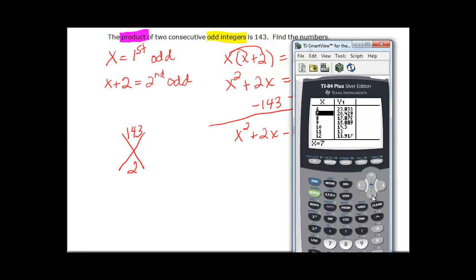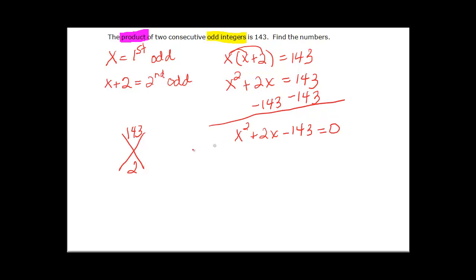So it's a negative 143 so that means that I need a negative 11 and a positive 13 to add up to positive 2. So it's X minus 11 and X plus 13 and that's equal to 0.